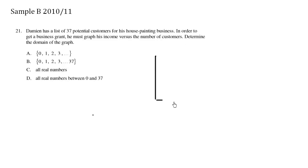Now we're talking about income and the number of customers, and he may have between 0 and 37 customers because these are potential customers. So 0, 1, 2, dot dot dot, up to 37.